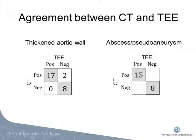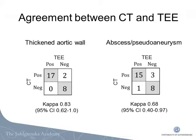Fifteen patients had a pseudoaneurysm detected with both CT and TEE, and both exams were negative in eight patients. TEE detected one abscess not found with CT, while CT found three pseudoaneurysms not detected with TEE. The strength of agreement calculated with Kappa statistics was classified as very good for thickened aortic wall and good for abscesses and pseudoaneurysms.